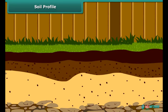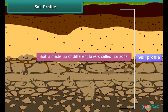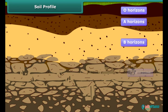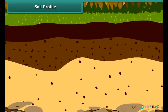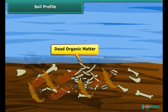Soil Profile. Soil is made up of different layers called horizons. Each horizon has its own characteristics. A soil basically has five horizons, namely O, A, B, C and bedrock. The first layer is called the O horizon. This layer contains dead organic matter that lies on the surface, and mostly consists of fallen leaves and decaying animals.